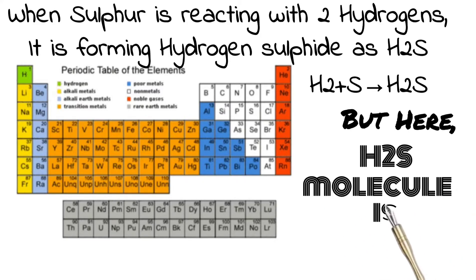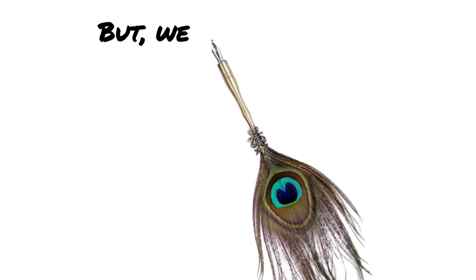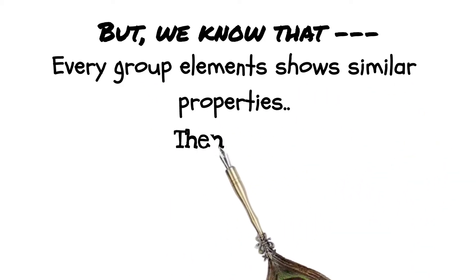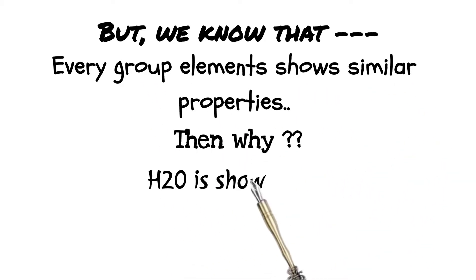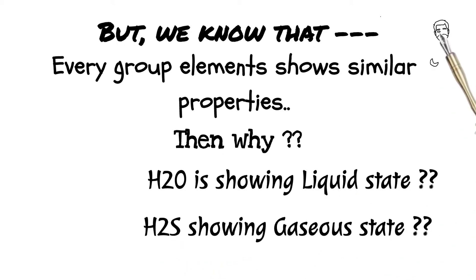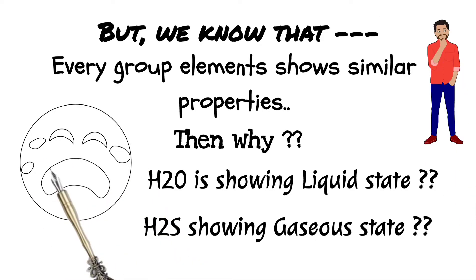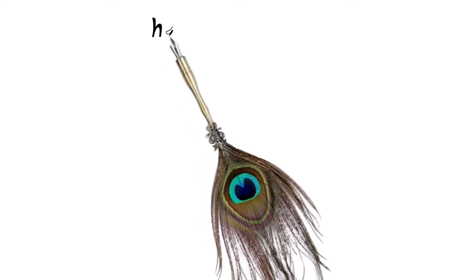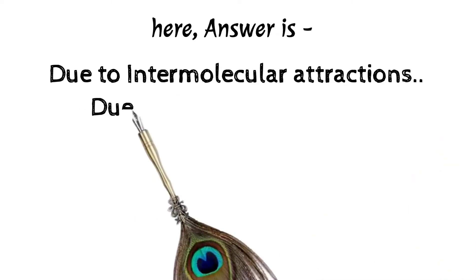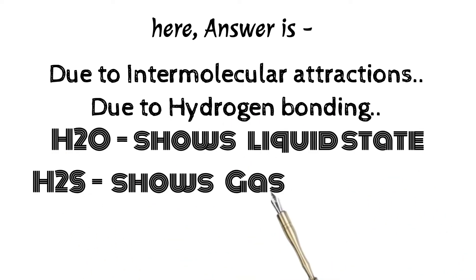We know that every group element shows similar properties — so why does H2O show a liquid state while H2S shows a gaseous state? Why, if both are in the same group, do they behave differently? The answer is due to intermolecular attractions — due to hydrogen bonding.